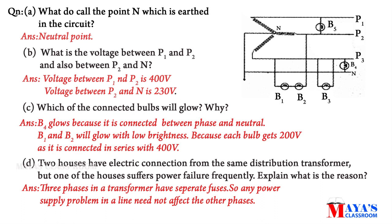The questions are: What do you call the point N which is earthed in the circuit? That is the neutral point. Then, what is the voltage between P1 and P2, and also between P2 and N?